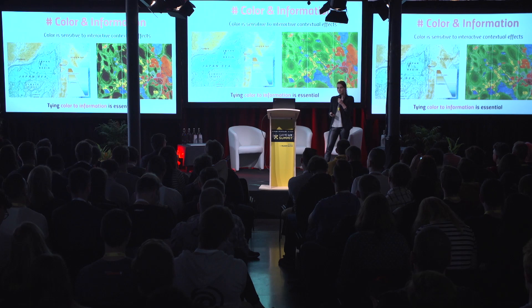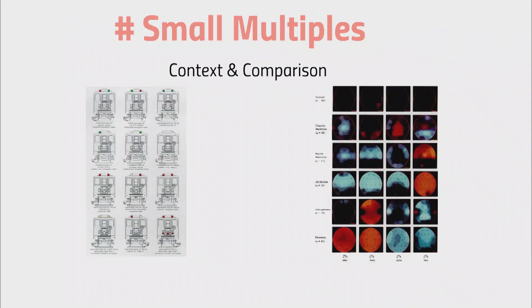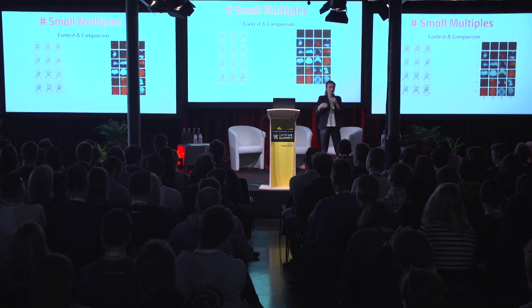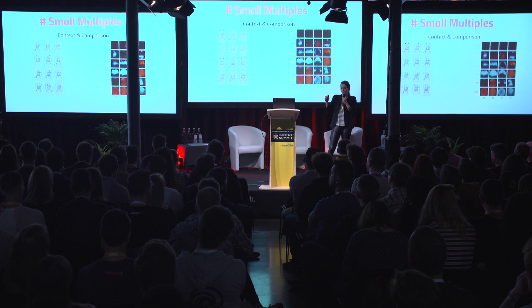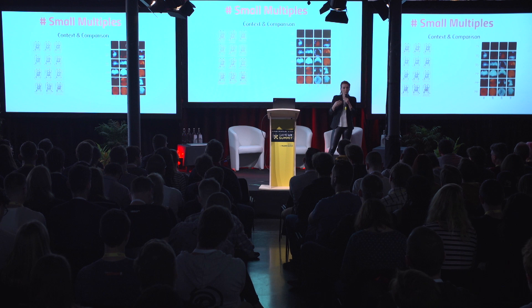The fourth principle is small multiples — creating context and comparison. Examples include different train signals and various brain conditions. This type of visualization helps you make choices based on various alternatives. If you know what conditions exist, it's much easier to pick the right one, and this helps make much better, more informed choices — because you know the whole context.